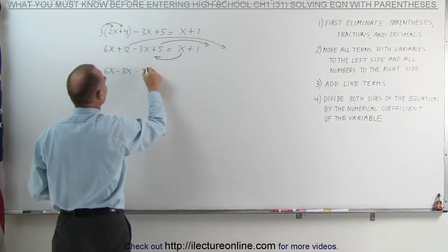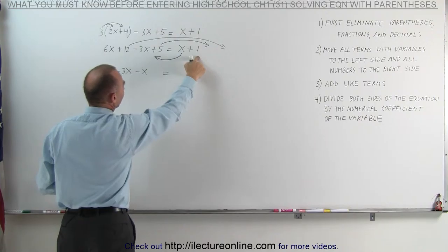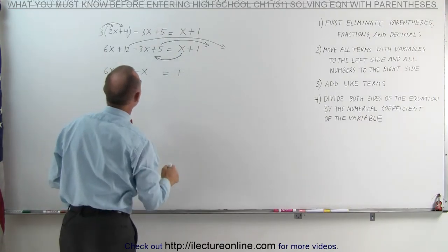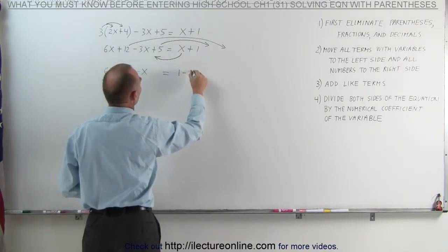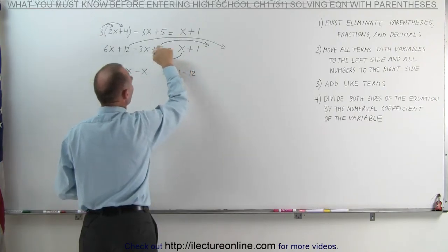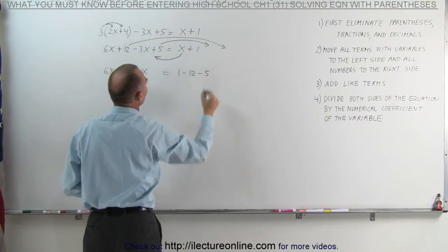On the left side, we end up with the following. We still have the 6x minus 3x, which we're already on the left side. When we move the x to the left side, the positive x becomes a negative x. On the right side, we already had the number 1. When we move the 12 to the other side, it becomes a minus 12. And when we move the positive 5 to the other side, we get a minus 5.